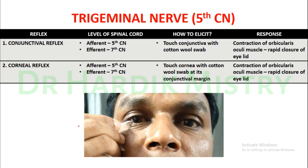Next, we have to check the conjunctival reflex and corneal reflex. For the conjunctival reflex, the afferent is the 5th cranial nerve and the efferent is the 7th cranial nerve. The same applies to the corneal reflex — the afferent is the 5th cranial nerve, which is the trigeminal nerve, and the efferent is the 7th cranial nerve, which is the facial nerve.